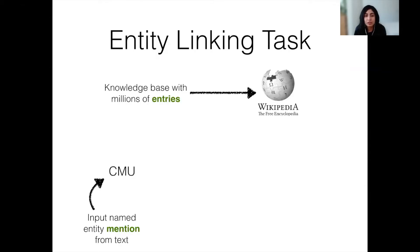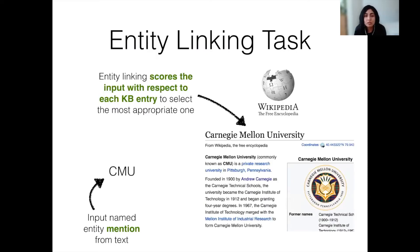In the first part of the talk, we discussed the task of entity linking and the challenges associated with adapting existing methods to low-resource languages. Just to remind you, the entity linking task involves associating an input named entity mention with its corresponding entry in a knowledge base that contains millions of entries. An entity linking system scores the input with respect to each entry in a knowledge base to select the most appropriate one as the entity link.